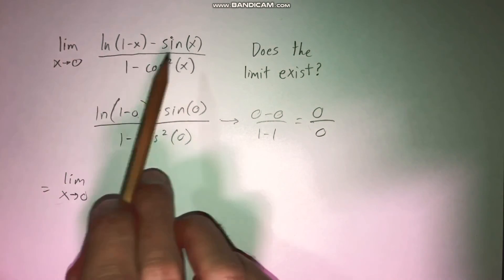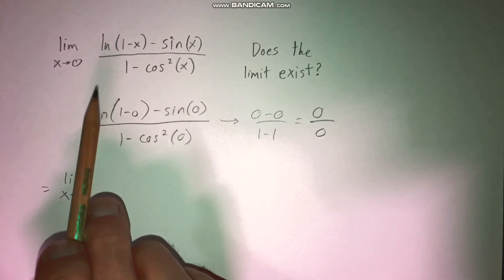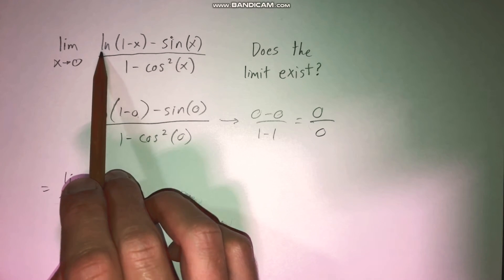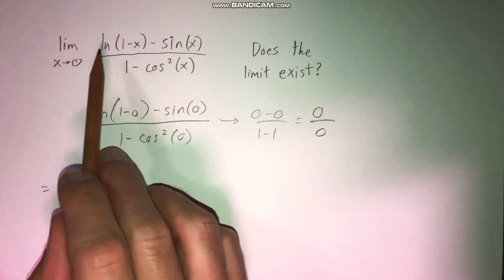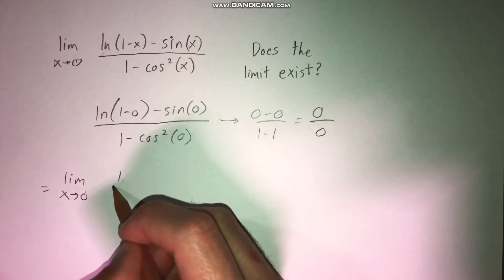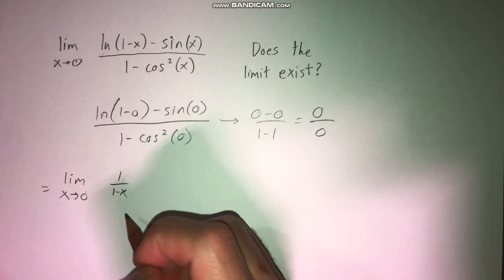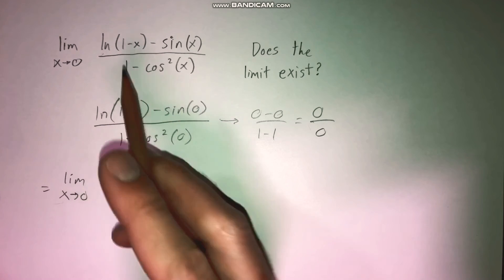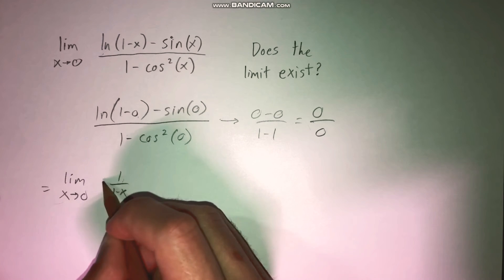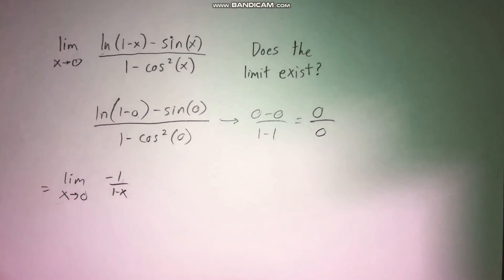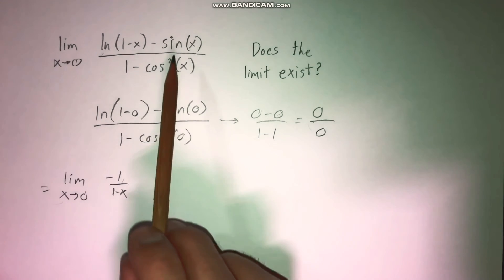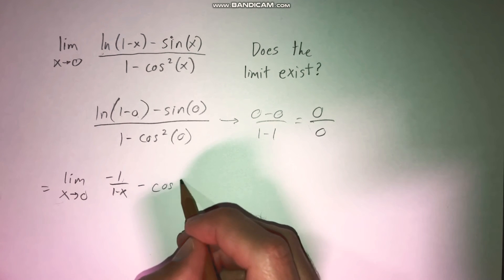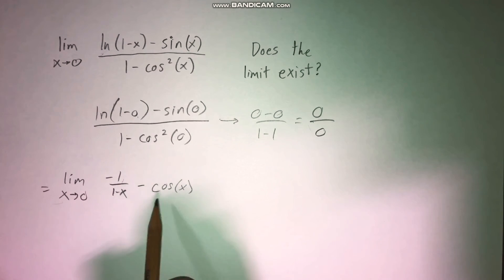So if we take the derivative of our numerator, we're going to use the chain rule. The derivative of the natural log piece: we take the derivative of the outside, which is the natural log, and keep the inside the same, giving us one over one minus x. Then we multiply by the derivative of the inside — the derivative of one minus x is negative one — so we get negative one over one minus x for that term. Then the derivative of sine is cosine x, so we have minus cosine x.